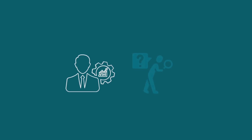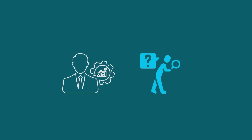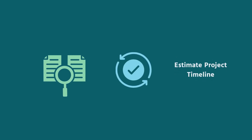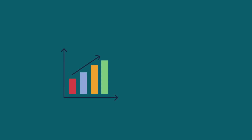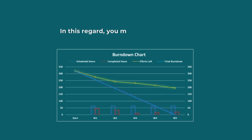As a project manager, you must keep an eye on how your project is going. For this reason, you can compare the actual progress of your project with the estimated project timeline and plot them in the same chart to visualize the status of your project. In this regard, you may consider creating a burn down chart.